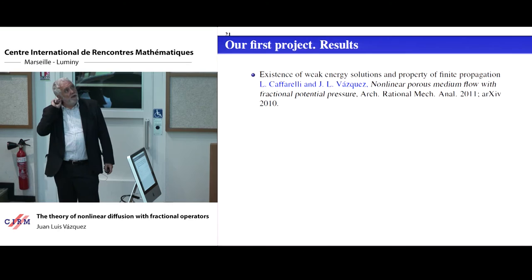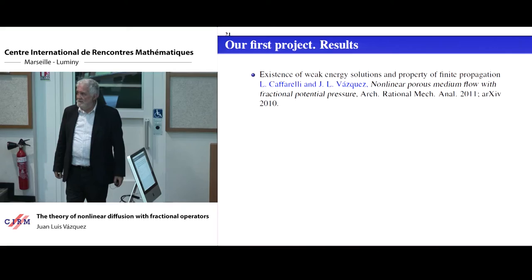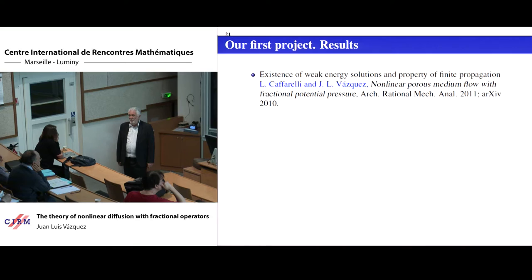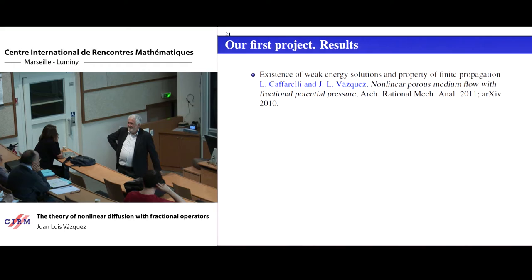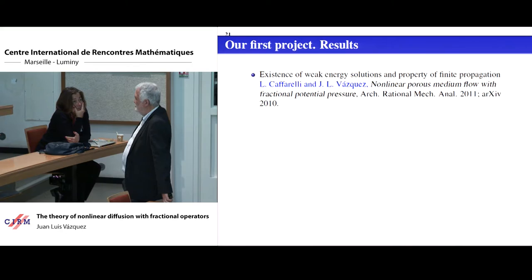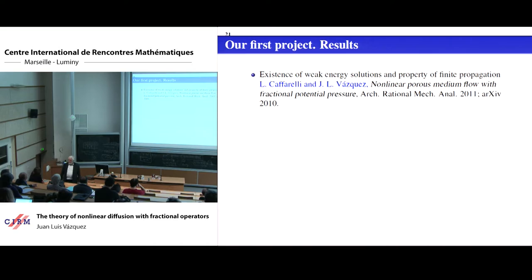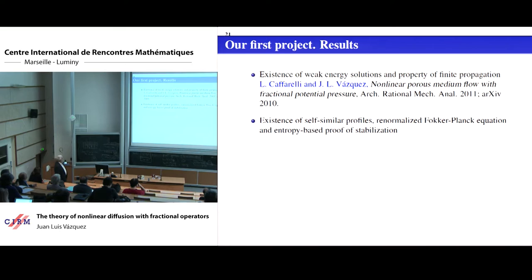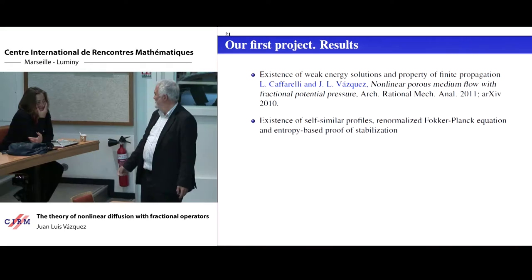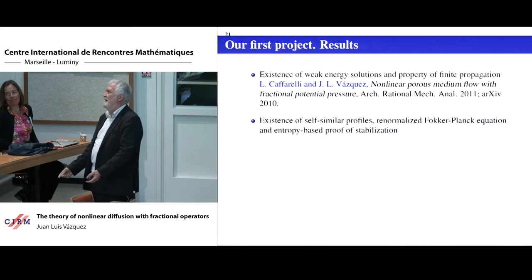We wrote a paper on weak existence of weak energy solutions. We could not prove a good theory of existence and uniqueness of strong solutions, so we introduced weak energy solutions based on a certain energy. We stopped for a time because we didn't know what the energy was. We asked people in statistical mechanics — they said of course, we already told you. Then we discovered what the energy was.